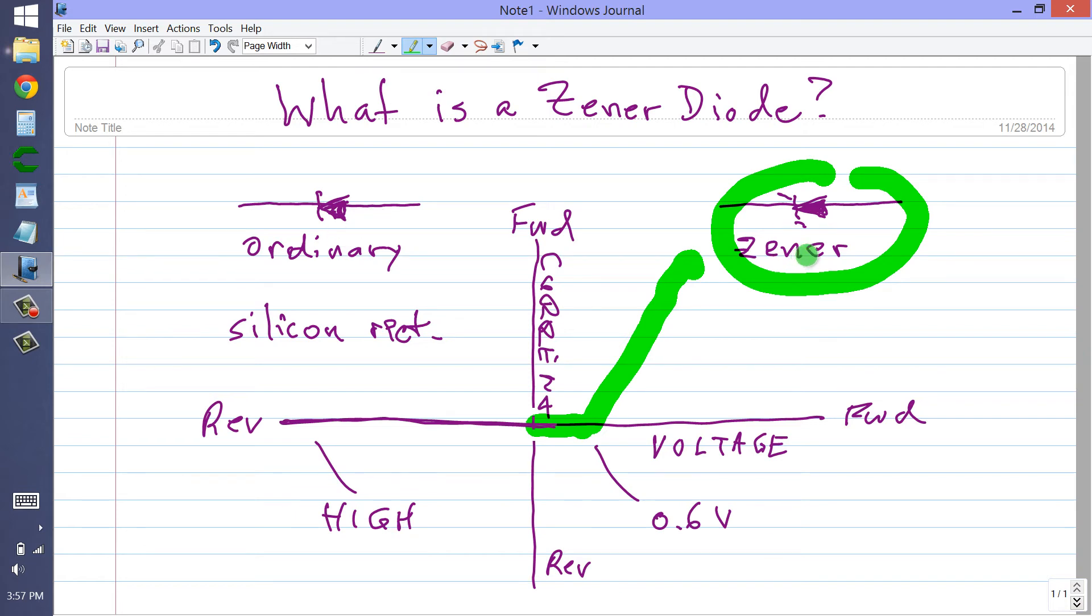In the case of a Zener diode, a lot of difficulty, but up to a much lower voltage. And that voltage, rather than avalanche voltage, is called the Zener voltage.